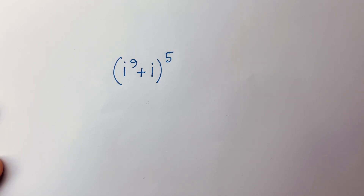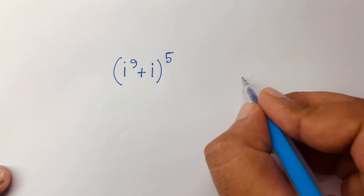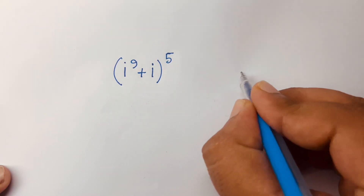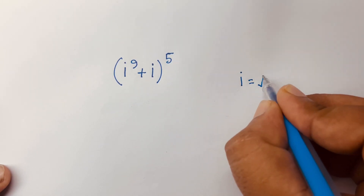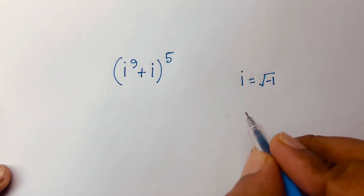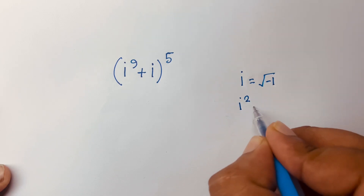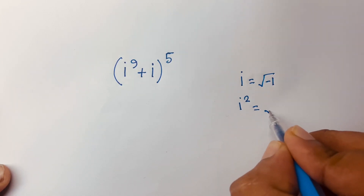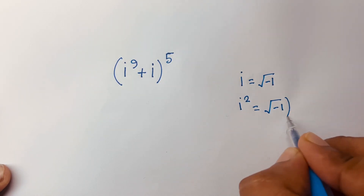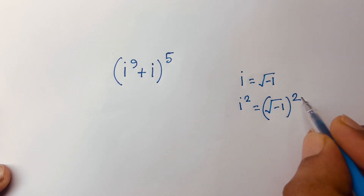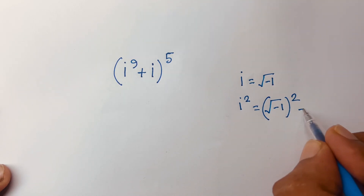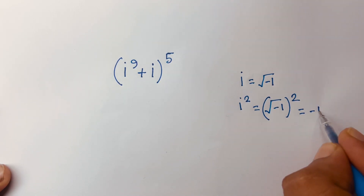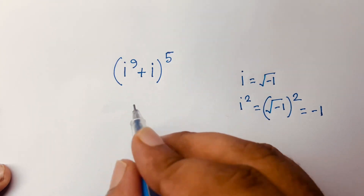How to solve i to the power 9 plus (2i) to the power 5. First of all, you know that i is equal to square root of minus 1, and i squared is square root of minus 1 bracket power 2, then the square root is cancelled and we find out that i² equals minus 1.